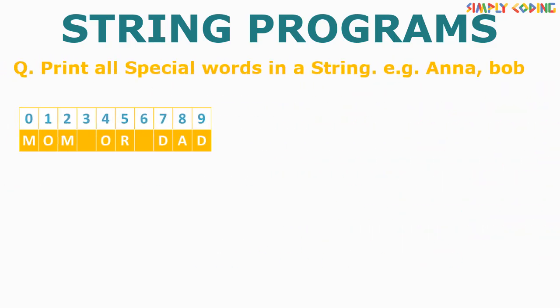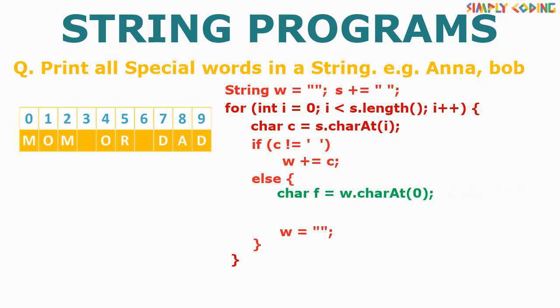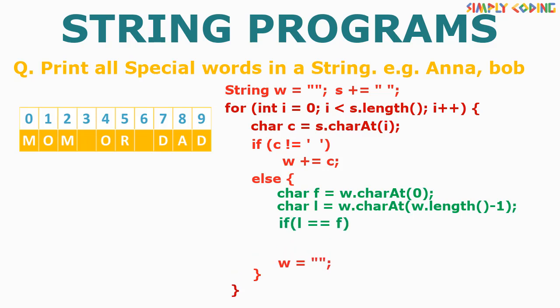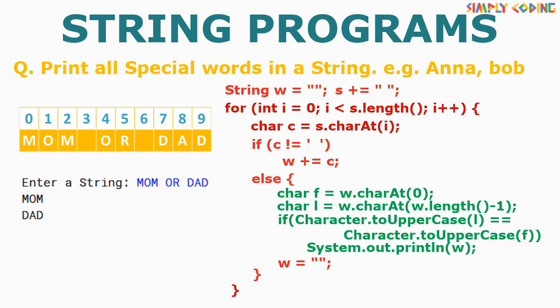The next program is to print all special words in a sentence. A special word is a word which starts and ends with the same character, like Anna, Bob, etc. Here too, we will take our template. In word processing, we will extract the first character of the word by using w.charAt(0) and the last character by using w.charAt(w.length()-1). We will then compare if both are the same. Since there could be differences in case, you can convert the characters to uppercase. If they match, we print the word.